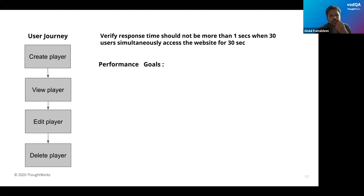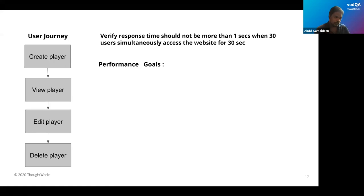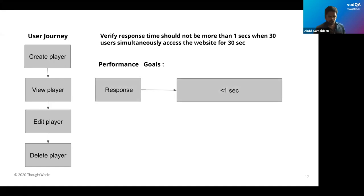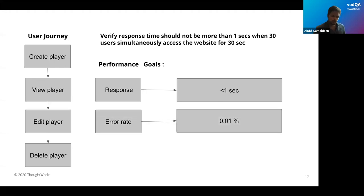For this scenario we have defined performance goals: response time should be less than one second, error rate should be less than 0.1 percent. From a realistic scenario, if your application works fine for 100 users but transactions start failing at 150 users, the application is not stable enough. We track the error rate to identify this. We also track throughput — how many requests per second at a particular point in time — to understand user capacity.